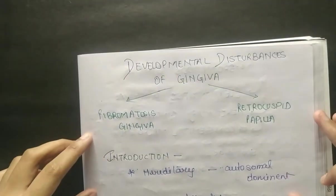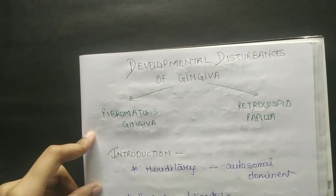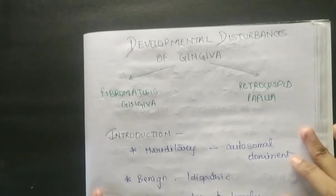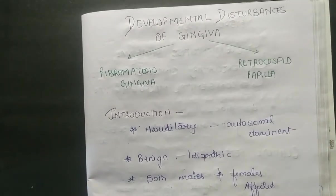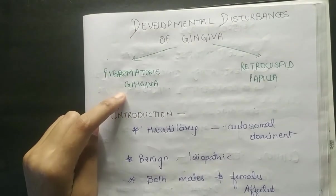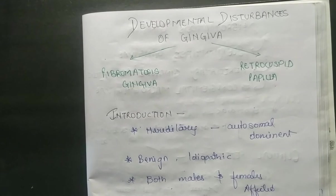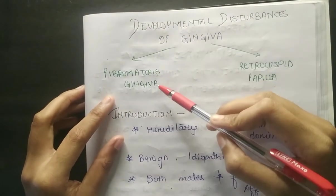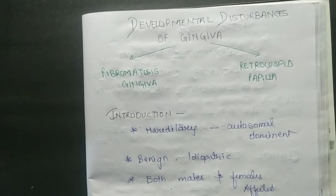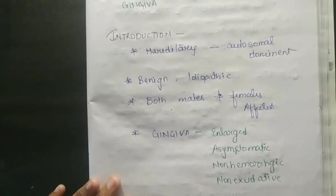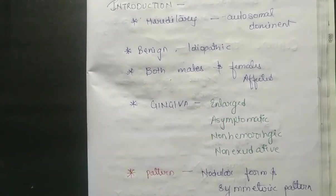Hello everyone, welcome to SAME - Study Art Motivation and Education. In this video we are going to discuss about the developmental disturbances of gingiva. We will see two parts: fibromatosis gingiva and retrocuspid papula. In this video I will cover the introduction and fibromatosis gingiva, and in the next video we will discuss retrocuspid papula.